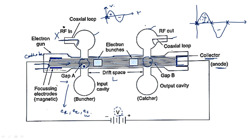Because of these three electrons with different velocities, they create electron bunches at different distances. Due to this electron bunching, the signal is amplified and sent out as the RF output. Any electron that escapes from the electron bunch is collected by the collector. The bunch is nothing but a group of electrons influencing the RF signal for amplification as it travels from the buncher cavity to the catcher cavity.